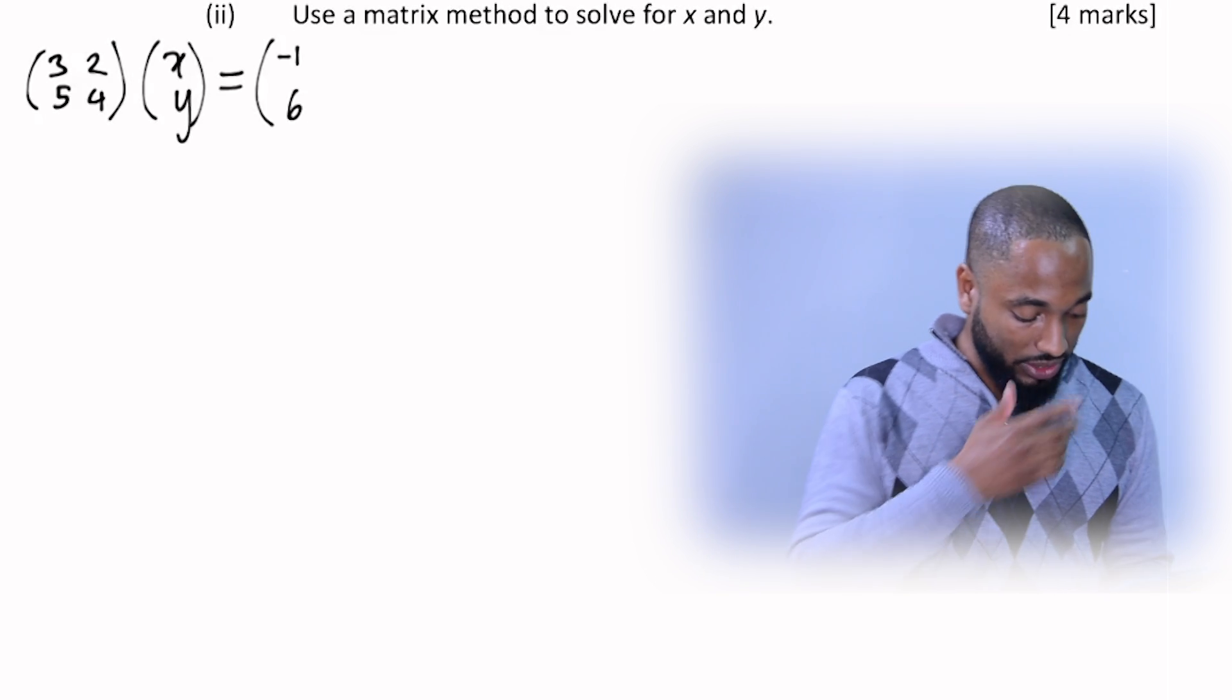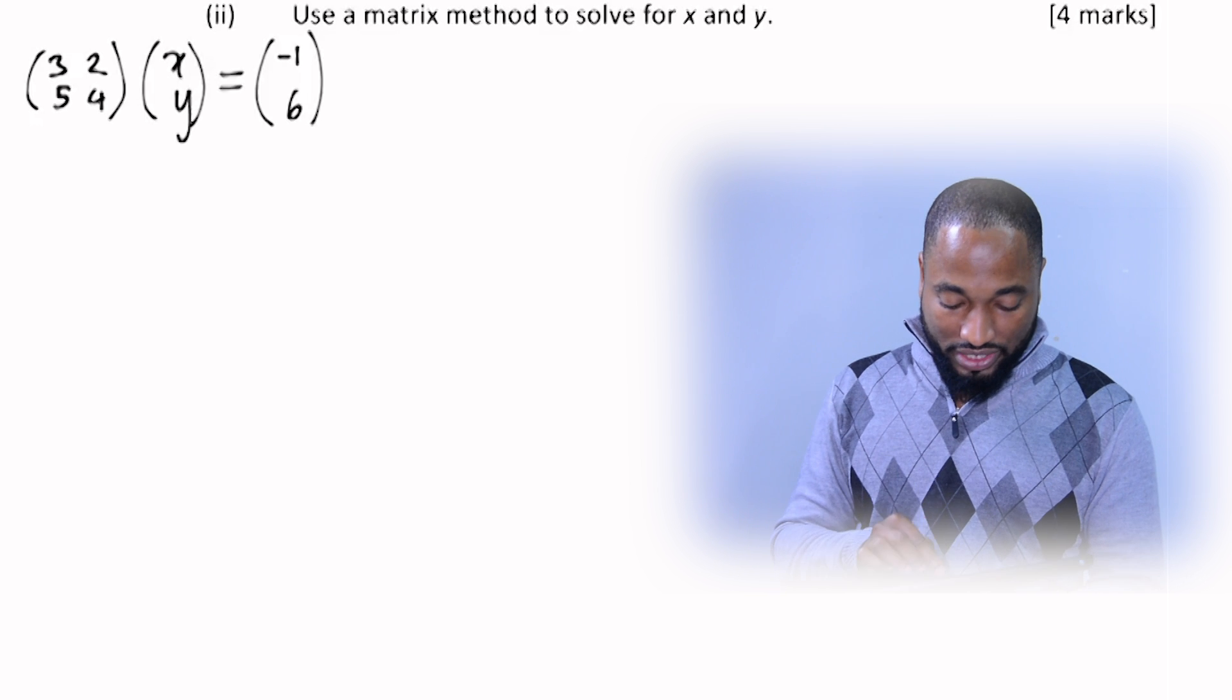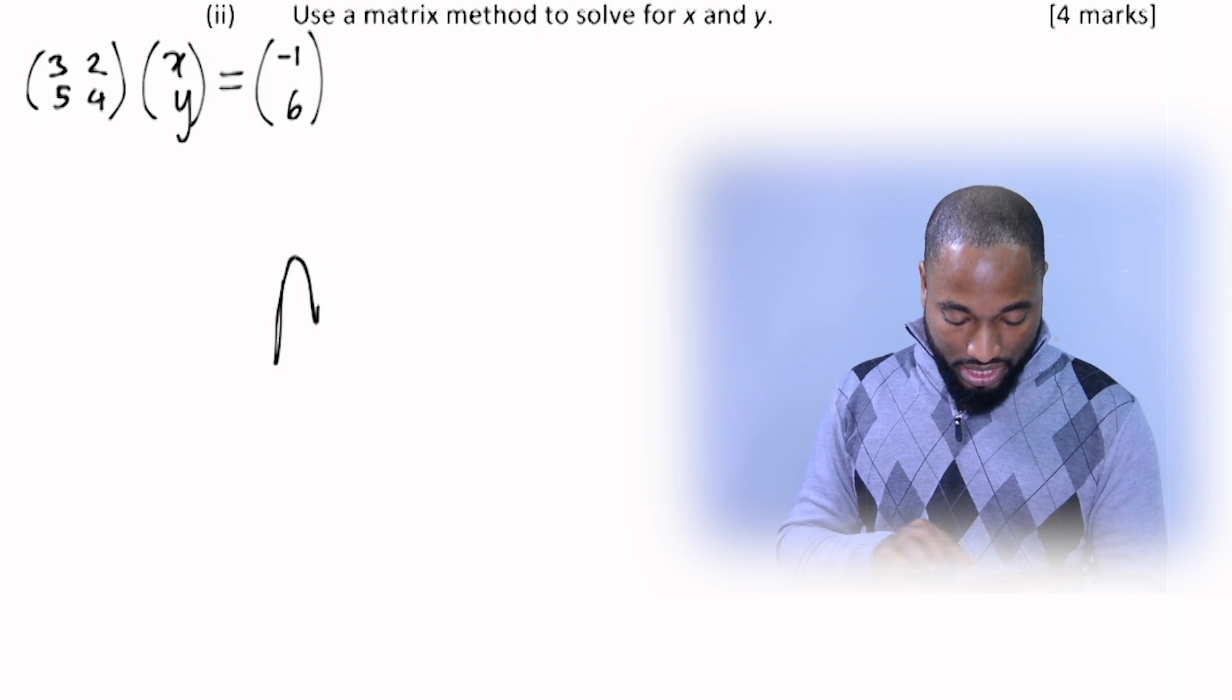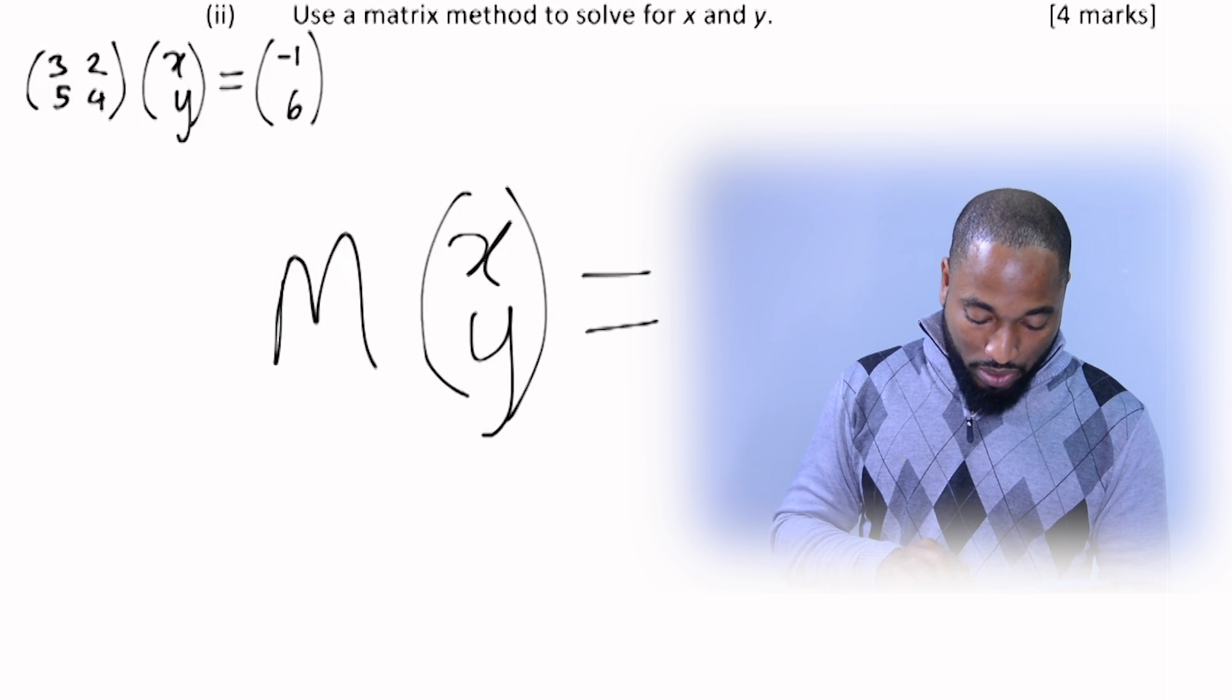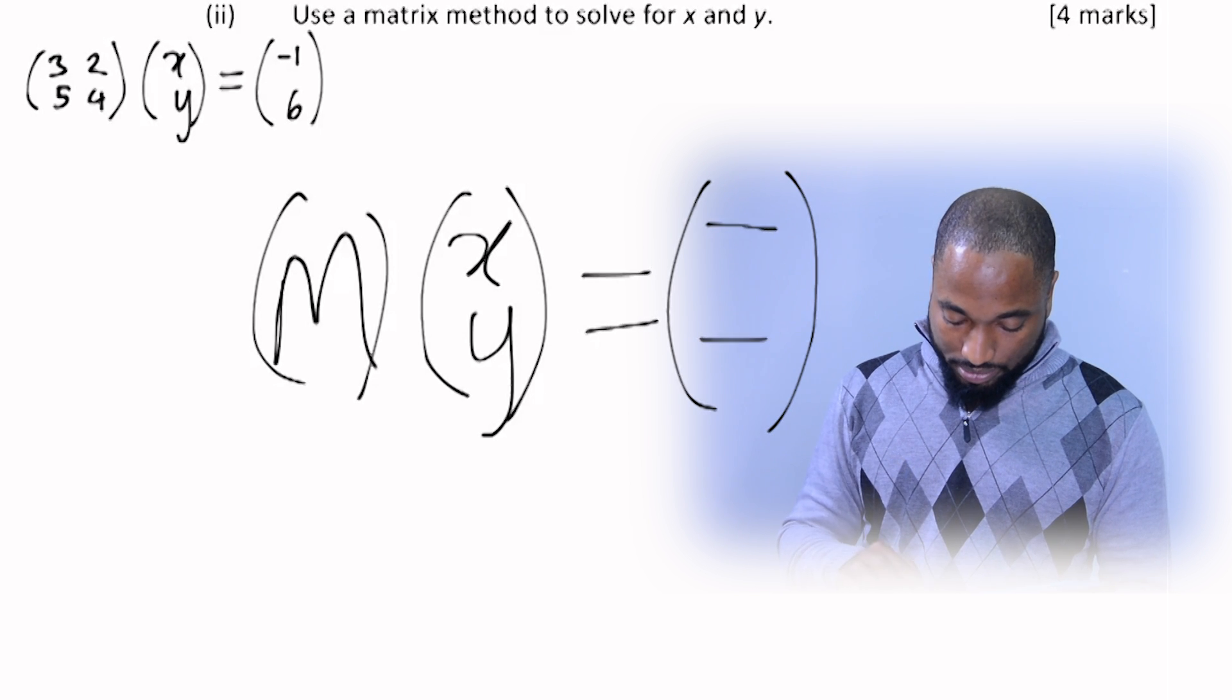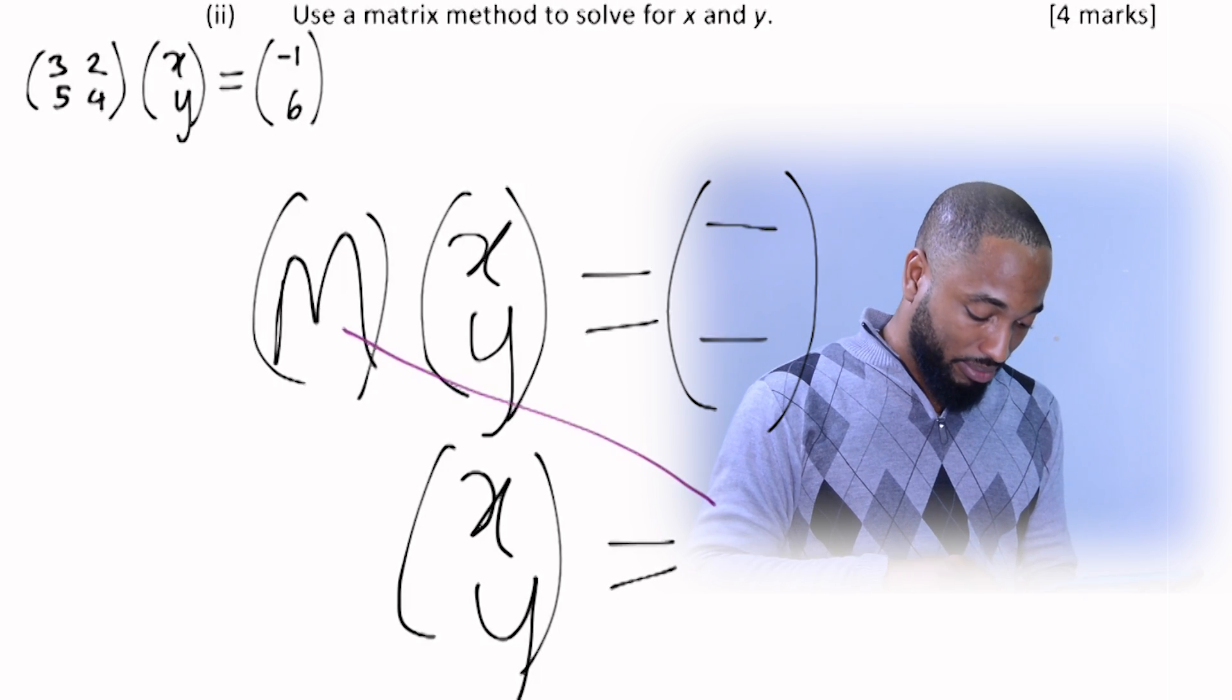Alright let's go on to actually solving it. So how do we actually solve this? Let me just do a quick explanation for those who are brand new to this. You have our matrix M. You have the X and Y. That's what we want to get. This is equal to some numbers here. And to get X and Y you want to bring across this M, this matrix across the equal sign.